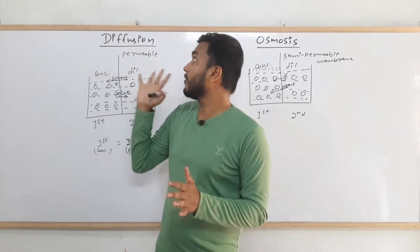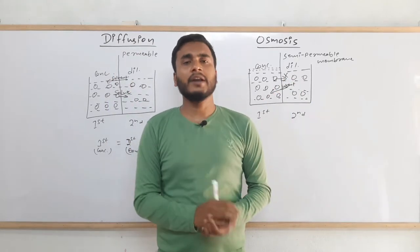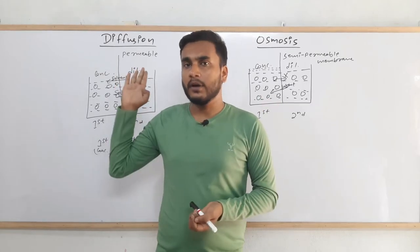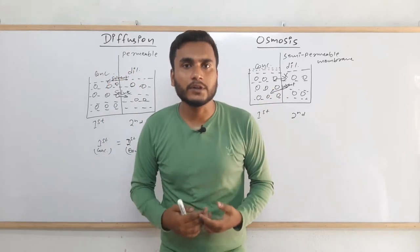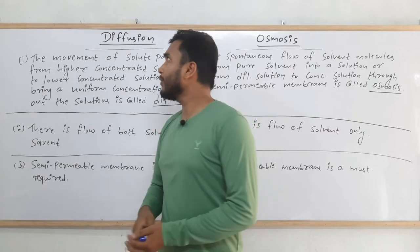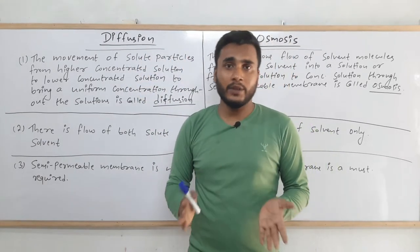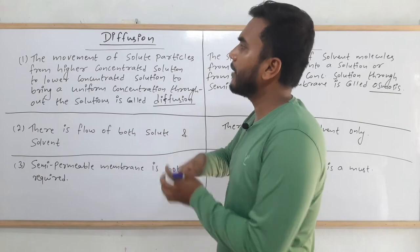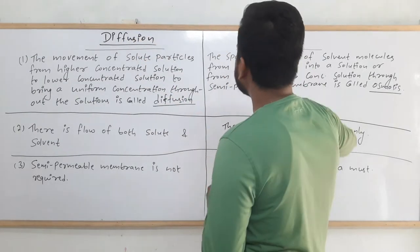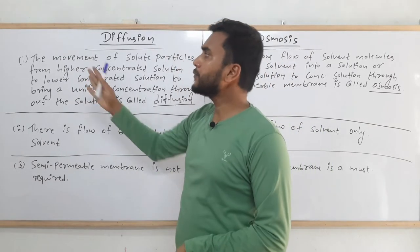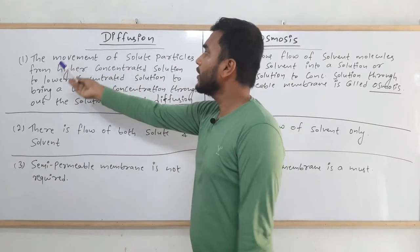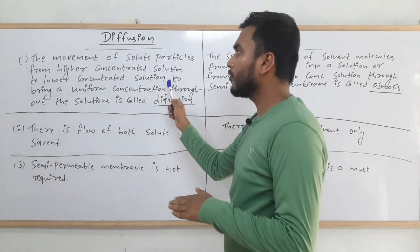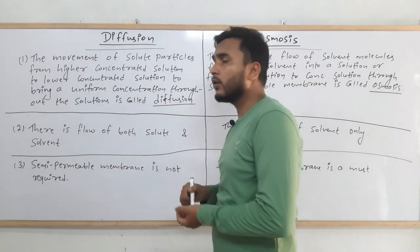Now that you have understood the difference between diffusion and osmosis, since this difference is frequently asked in examinations, I have made a chart. In the left side I have written three points of diffusion and on the right side three points of osmosis. The first point: the movement of solute particles from higher concentrated solution to lower concentrated solution to bring a uniform concentration throughout the solution is called diffusion.